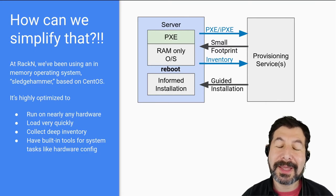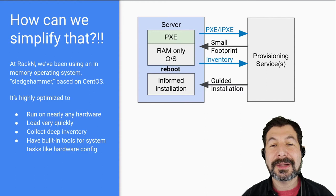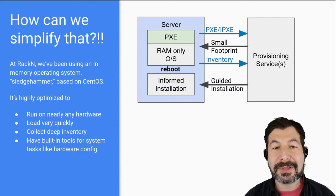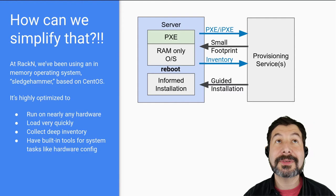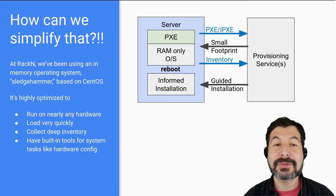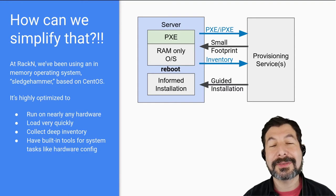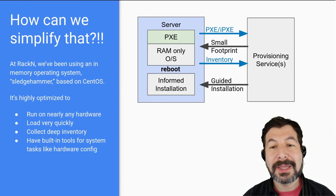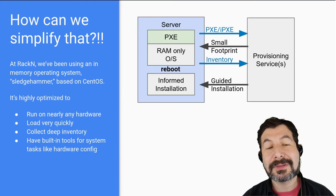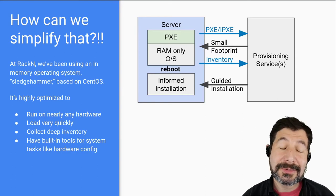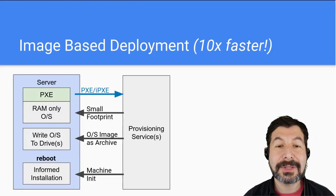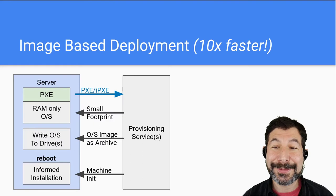The boot times are really fast, it doesn't have to install a lot of stuff, and it's a great way to just get things going. We've even built Kubernetes installs that use Sledgehammer as the base OS — you just have to mount the disks and attach the storage, which is actually not a big deal. It's also the basis for our image-based deployment, which we'll get to right now.